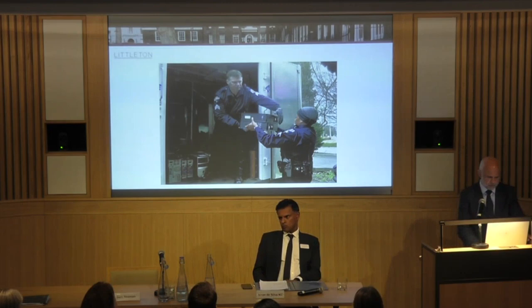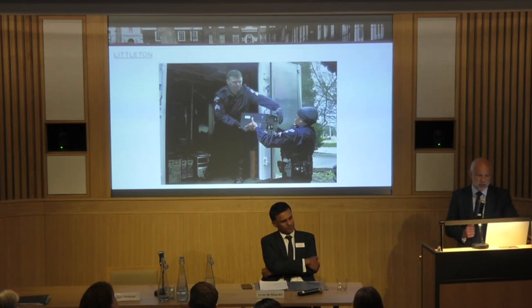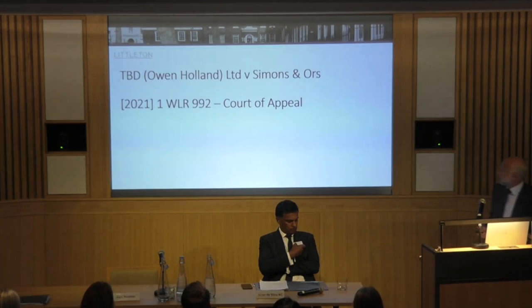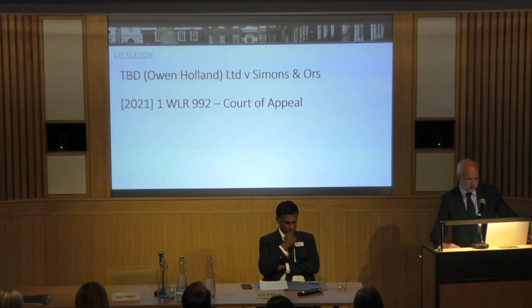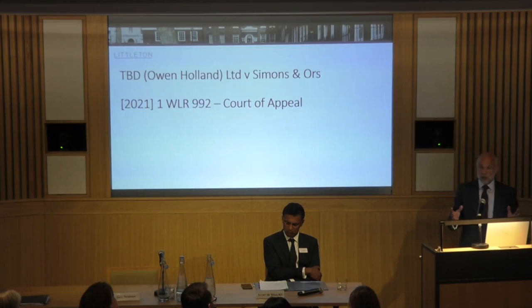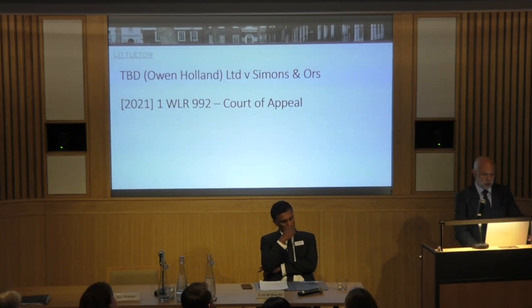What are the principles on which the courts will grant imaging and inspection orders? Surprisingly, there's only one Court of Appeal case on this topic, and we had to wait till 2021 to get that. It's the case of TBD Owen Holland against Simons and others. The central takeaway from TBD is that although we talk of imaging and inspection orders as though they were one composite whole, one order, imaging and inspection are, in fact, two separate and sequential steps requiring separate consideration and different tests.